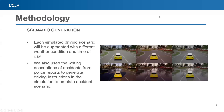Second, we will generate the driving scenario for the car. Each driving scenario will be augmented with different weather conditions and time of day to alter the lighting of the scenario. We also use the written description of accidents from police reports to generate the driving instructions for the car in the simulation. This is to attempt to emulate the accident scenario.